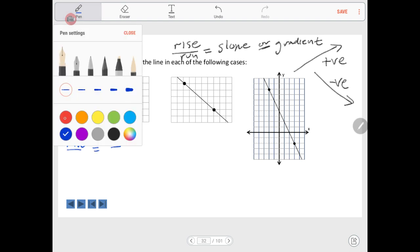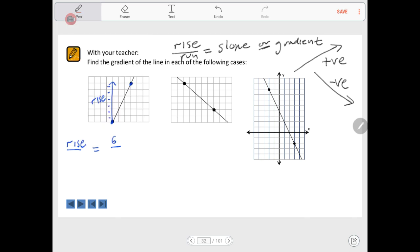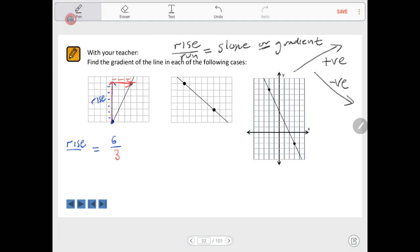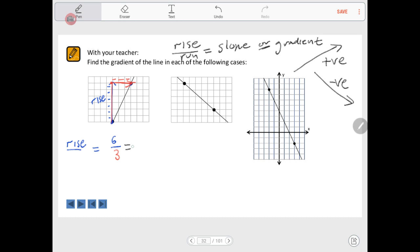Now, what is our run? From this point, we go across. We pick up where we left off with the rise: one, two, three units that way. See how we start at one point and finish at the other, but we go up and across. In this case, the gradient will be six divided by three, which equals two. There's our gradient.